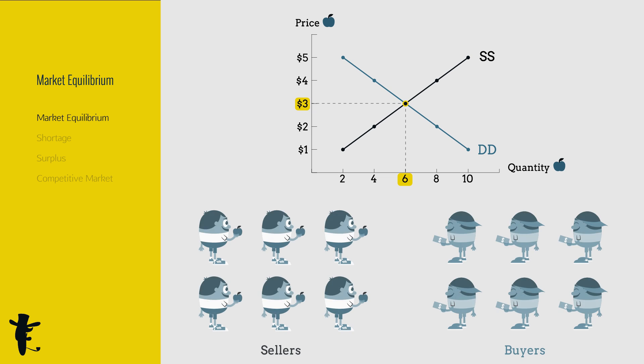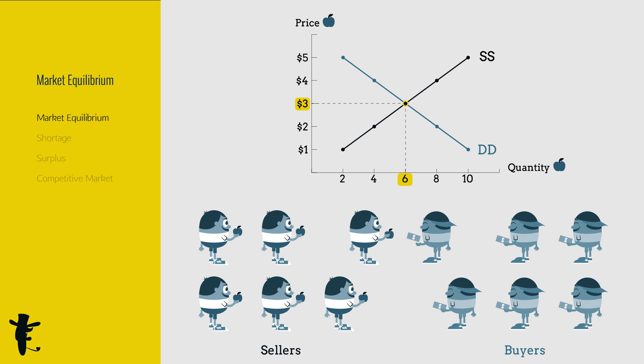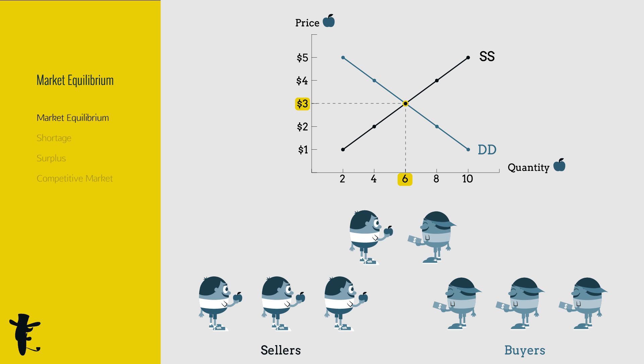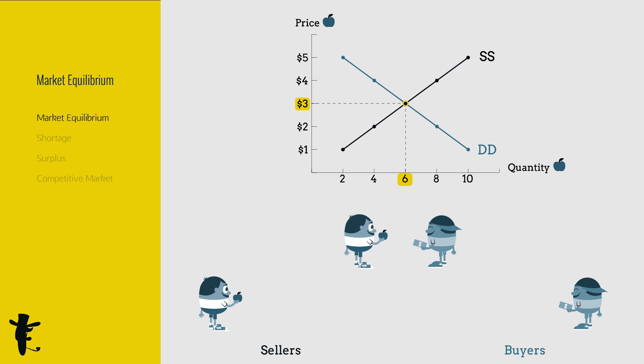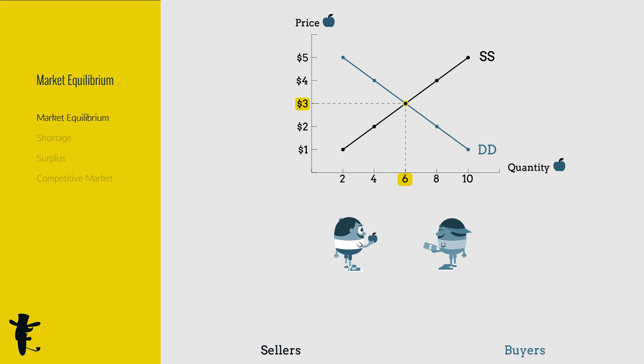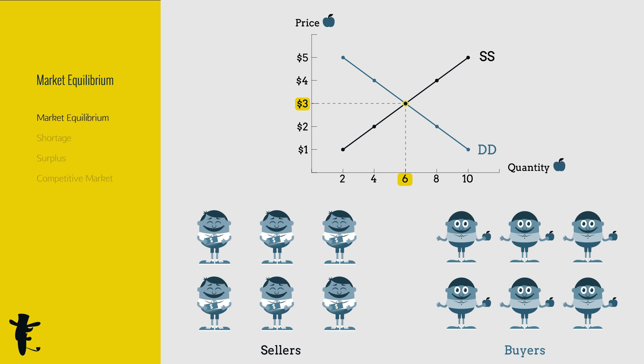When the amount the sellers want to sell is equal to the amount the buyers want to buy, everyone is happy. Price is stable at market equilibrium. Anywhere else, price tends to change.